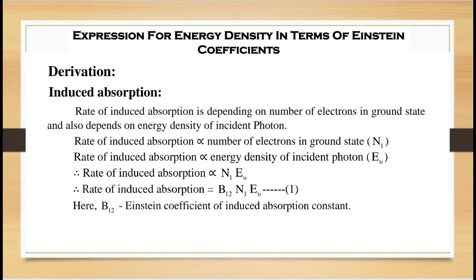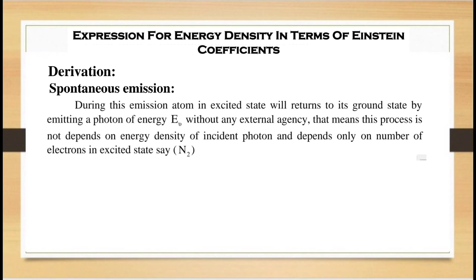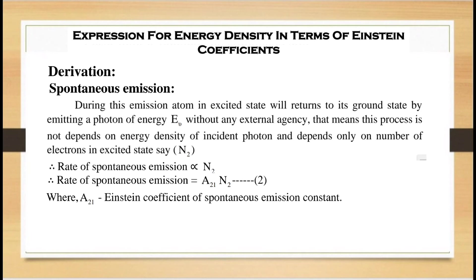Now consider spontaneous emission. During this emission, the atom in the excited state returns to its ground state by emitting a photon of energy hν without any external agency. This process does not depend on the energy density of the incident photon and depends only on the number of electrons in the excited state N2. Therefore, rate of spontaneous emission equals A21·N2, where A21 is the Einstein coefficient of spontaneous emission.